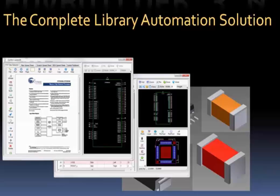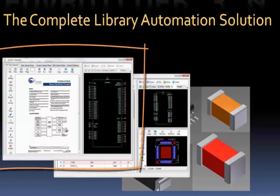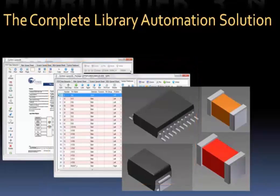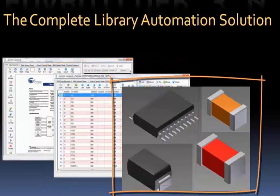The complete library automation solution with the industry's most advanced PDF datasheet extraction to extract complex PDF datasheet schematic symbols in a fraction of the time. Integrating the schematic symbols to the footprint automation with the most complete set of automation generators and calculators in the industry, and with the advancements to the 3D step automation — integrating the complete flow from the PDF datasheet and schematic symbol through the footprint automation and the 3D step models.